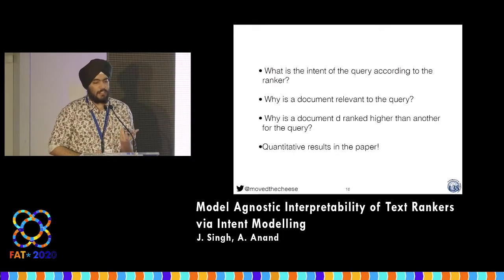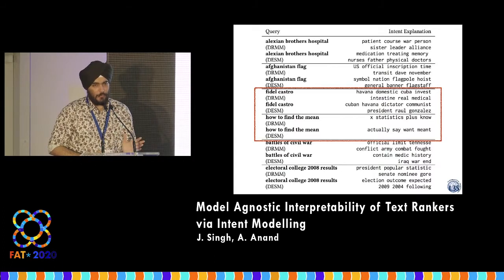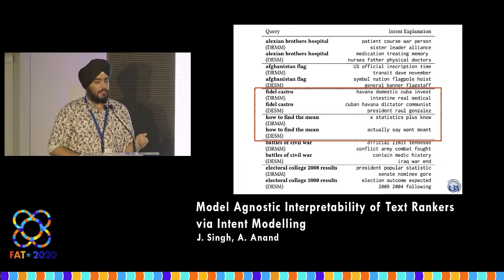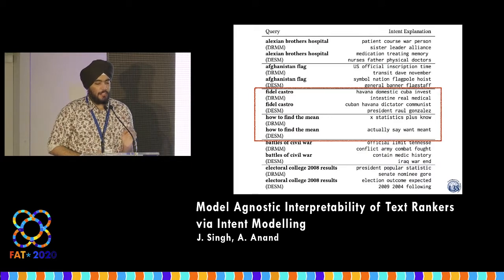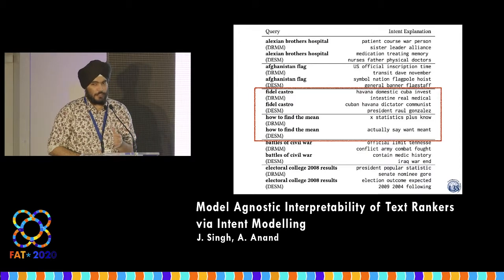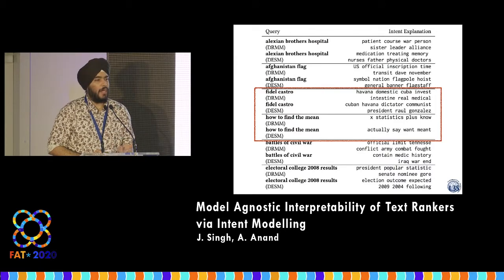The main questions we wanted to ask are: what is the intent of the query according to the ranker, and why is a document relevant to the query once we know the explanation model? This table, taken directly from the paper, shows queries sampled from our dataset alongside intent explanations for two neural ranking models — DRMM and DESM. For the query 'Fidel Castro,' DRMM seems to focus more on his health, whereas DESM focuses more on his brother Raul Gonzalez. These are two models trained on exactly the same dataset but focusing on different things. For the query 'how to find the mean,' DRMM nails it, whereas DESM is completely off — explaining why you get really bad results for DESM.